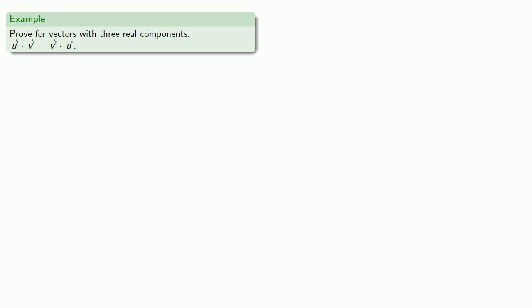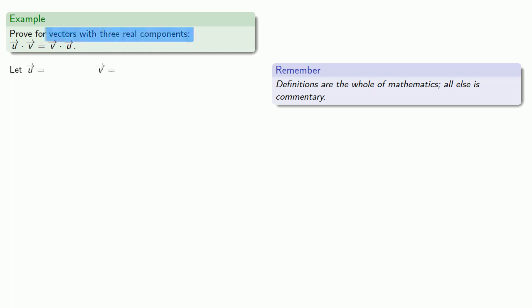So, as we try to prove things, it's useful to keep in mind definitions are the whole of mathematics. All else is commentary. One of the most important things about proof is it requires us to review what our definitions are. And, in this case, our starting point is we want to prove something for vectors with three components.